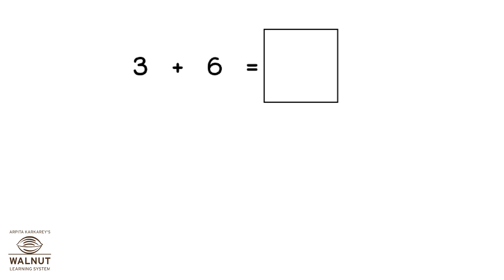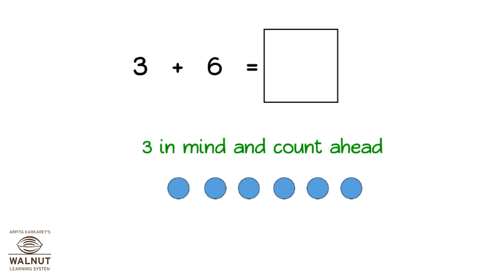3 plus 6. We keep 3 in mind and count ahead. 4, 5, 6, 7, 8, 9. So, 9 is the answer.